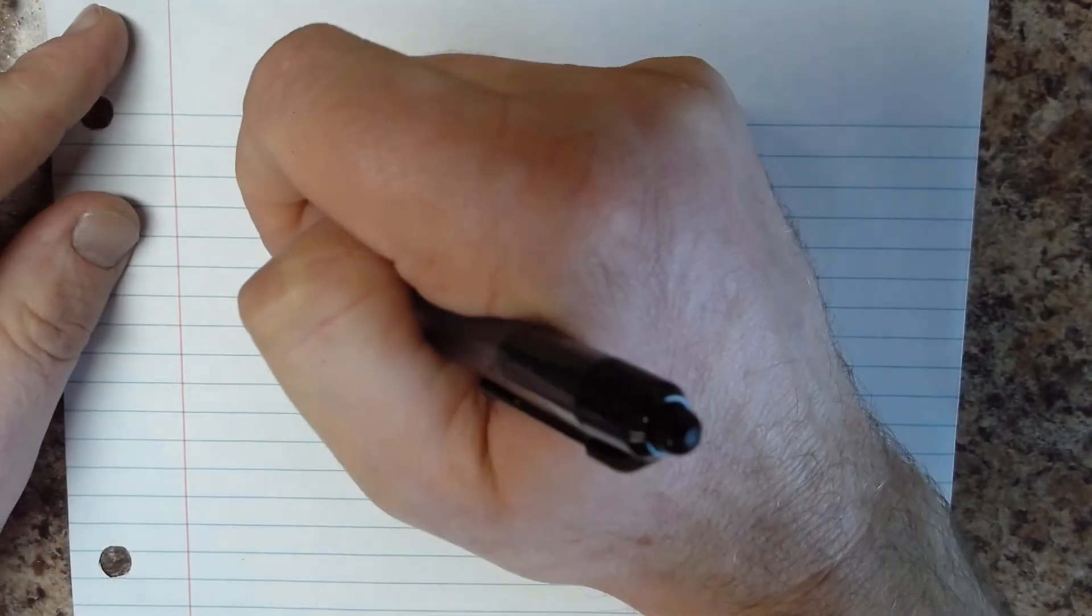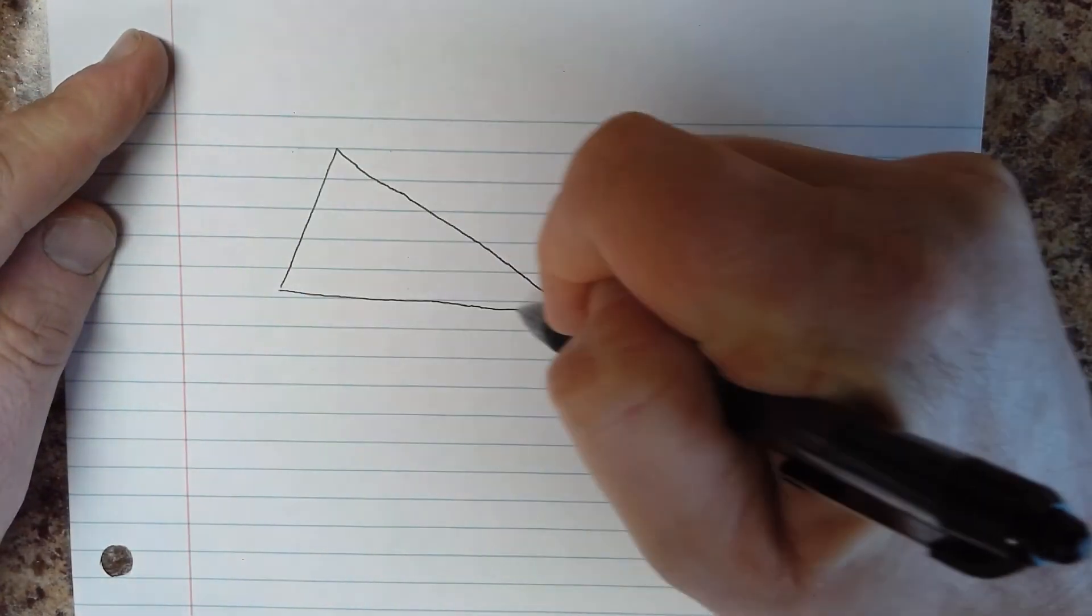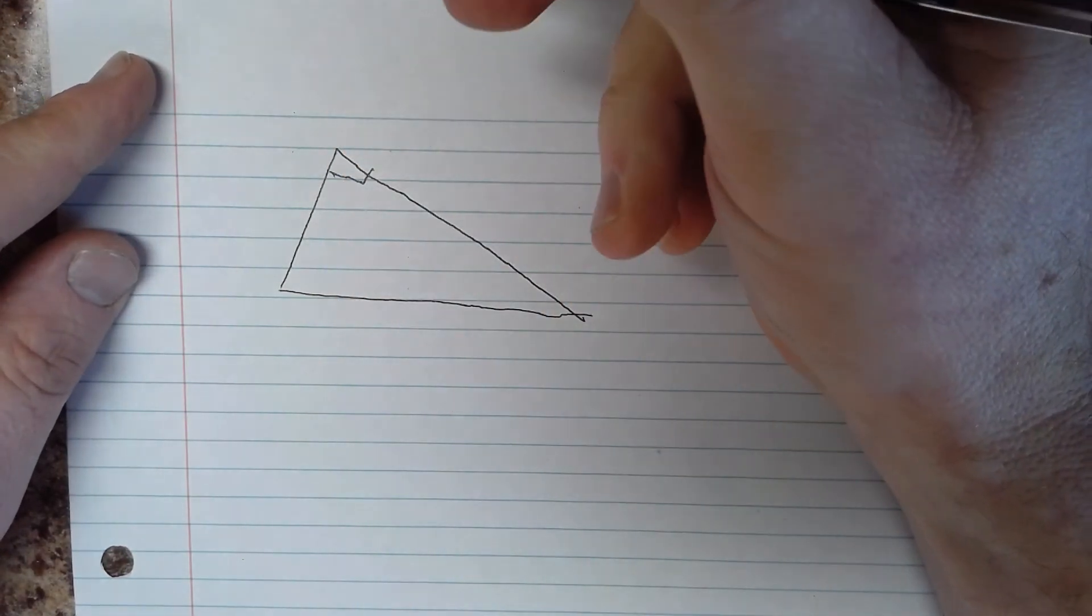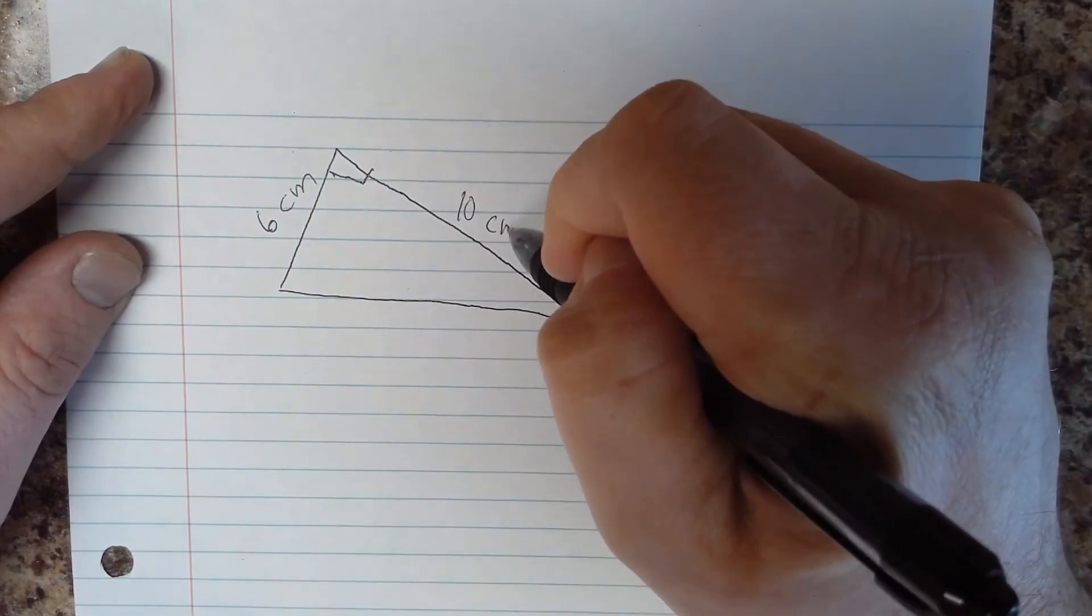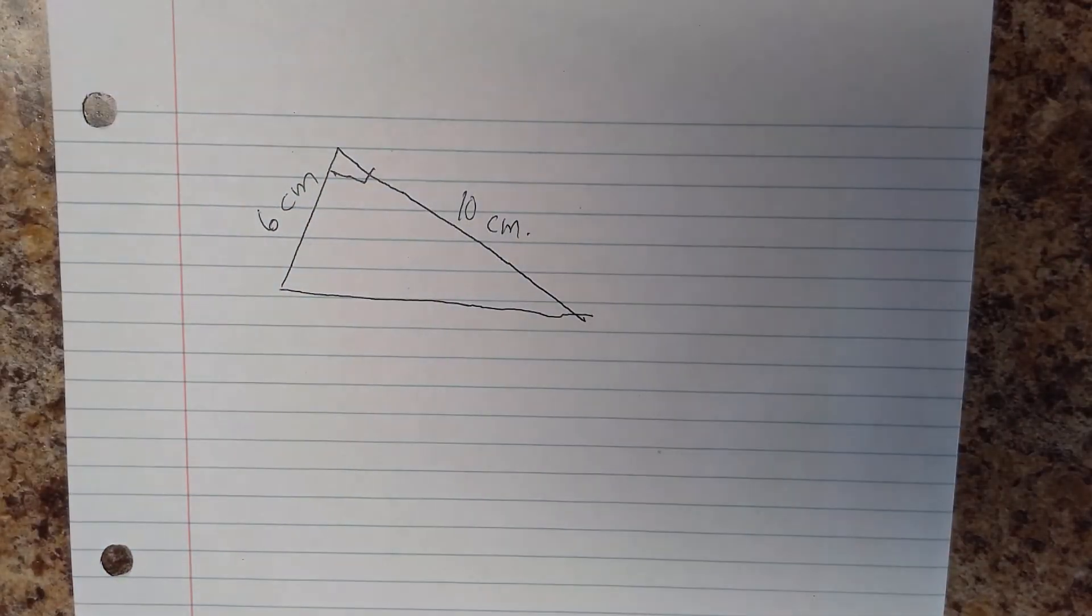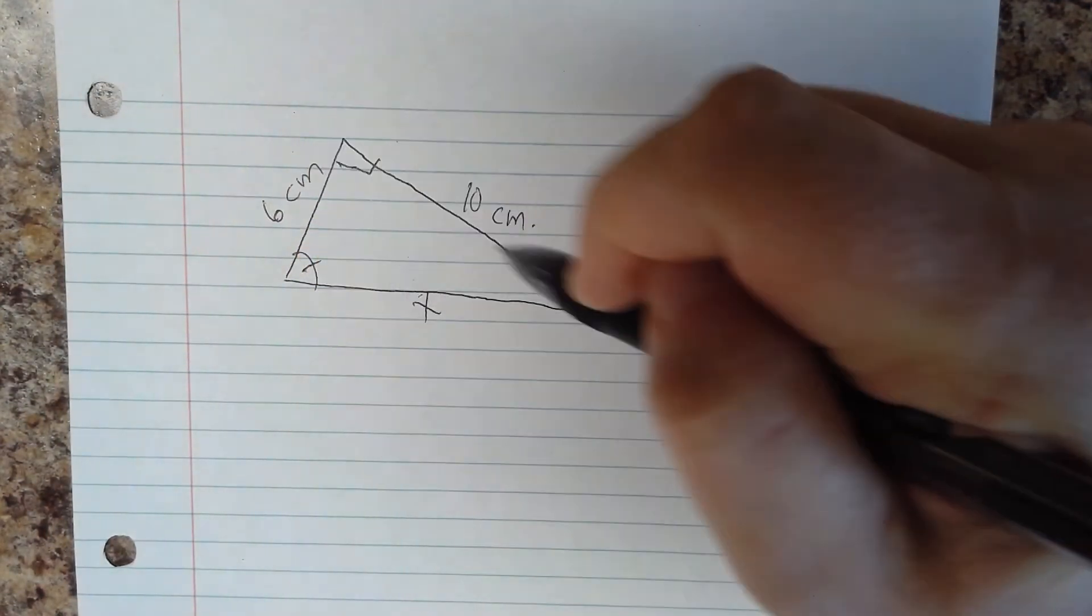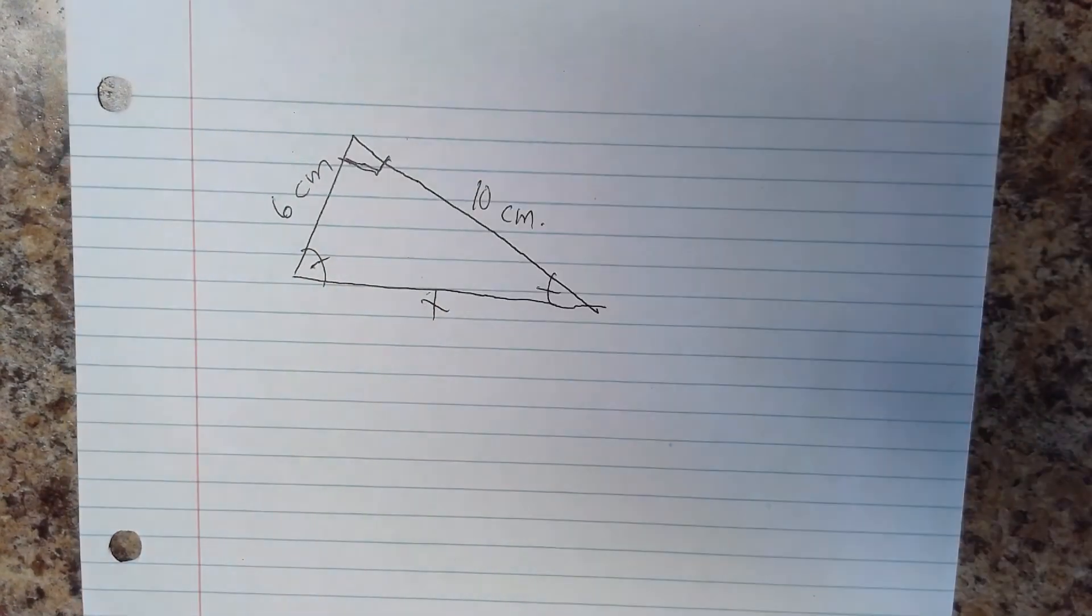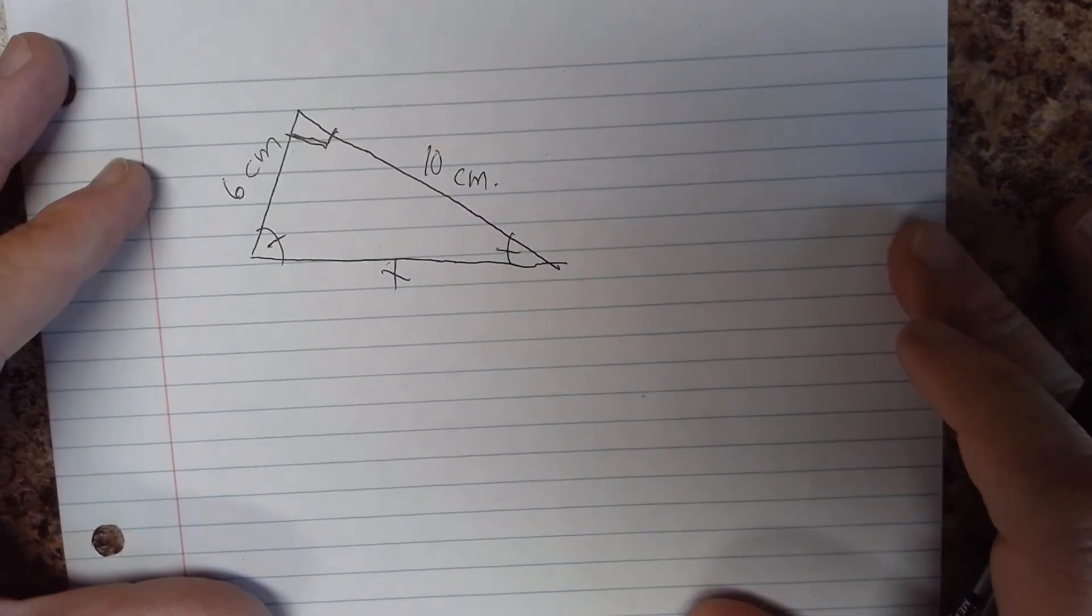This is 6 centimeters, this is 10 centimeters. So we want to solve this triangle for an unknown side and two unknown angles. Of course we know this one is 90 degrees, pardon my awesome sketching skills.